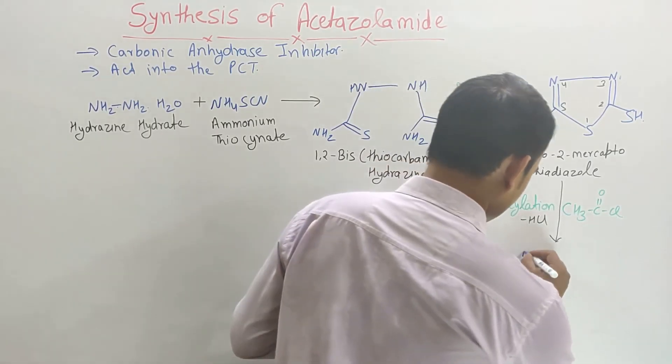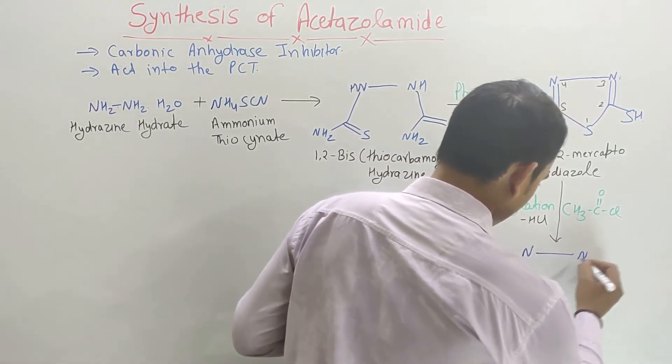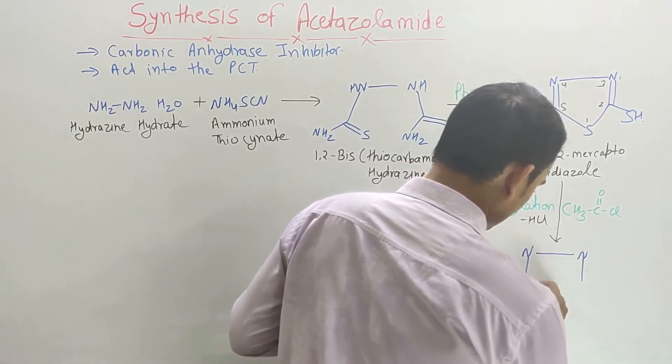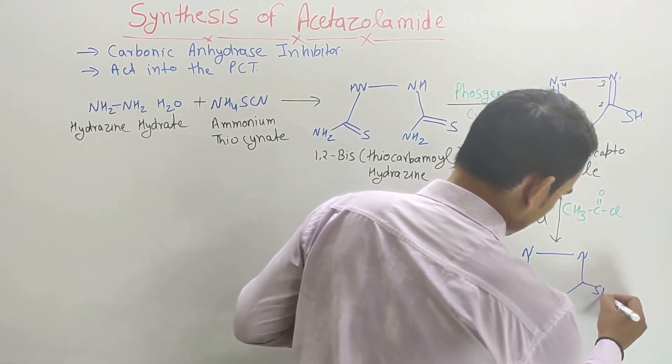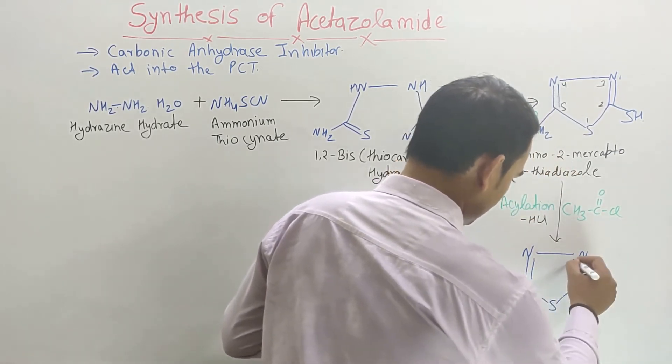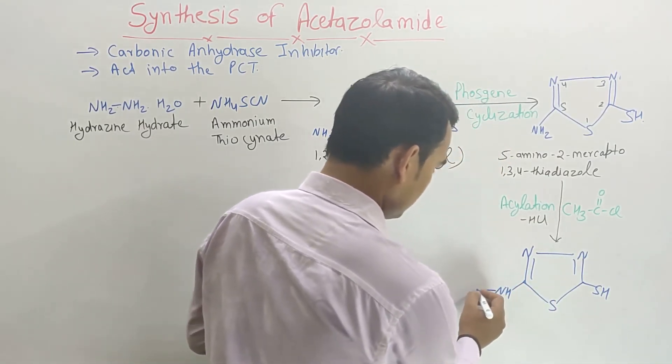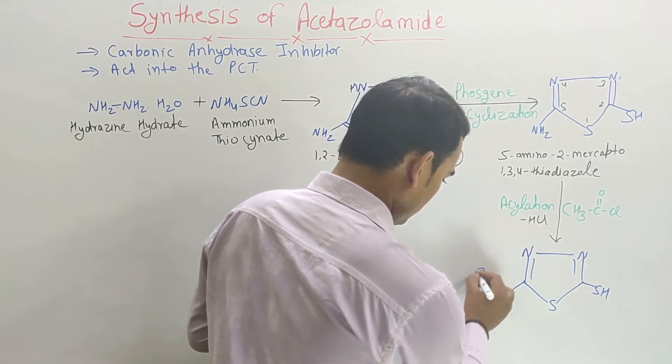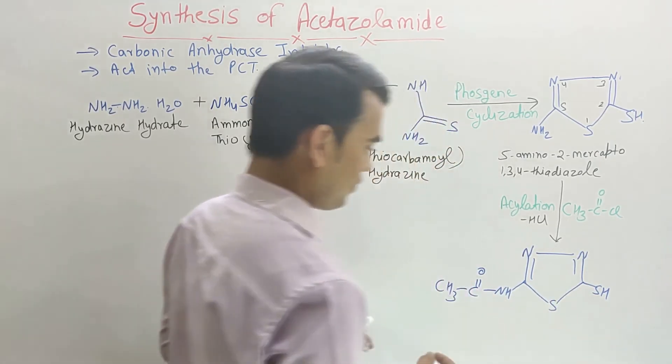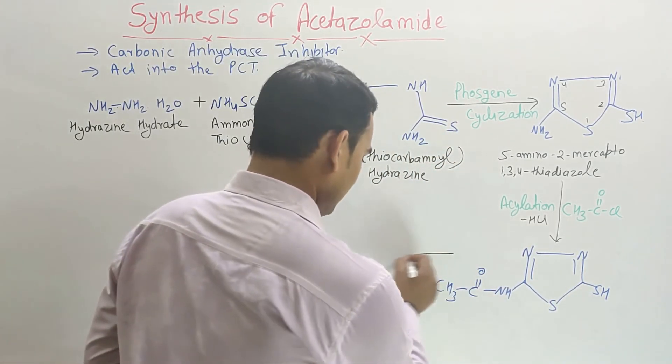Next it becomes like this: nitrogen, nitrogen, here sulfur, here it has SH. Here it becomes NH-CO-CH3. This intermediate again undergoes oxidation.